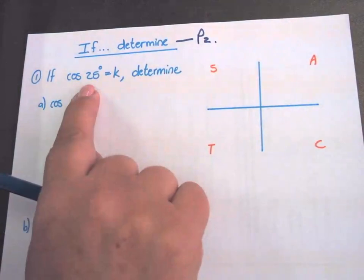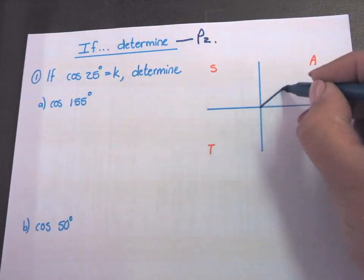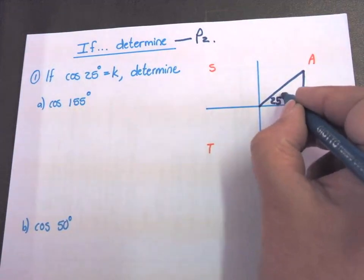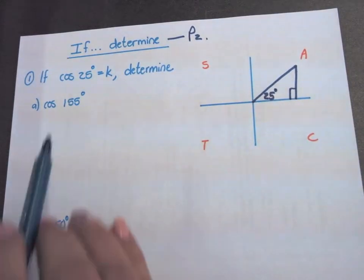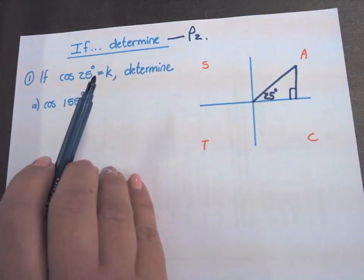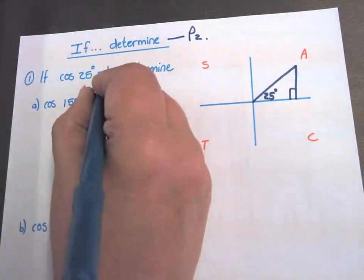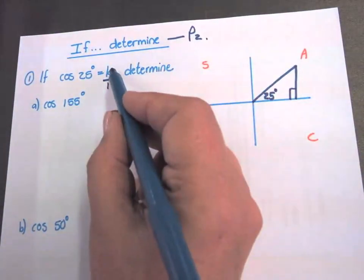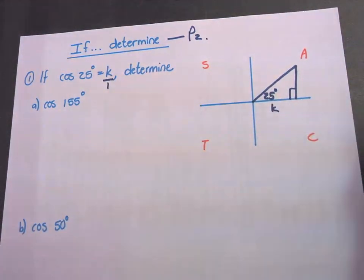Where is 25 degrees on the Cartesian plane? In the first quadrant. And we know it's 25 degrees. Cos equals K. But we know that sin, cos and tan is always a fraction. So we have to write this as a fraction, K over 1. Cos is adjacent over hypotenuse. So the adjacent one is K. The hypotenuse is 1.